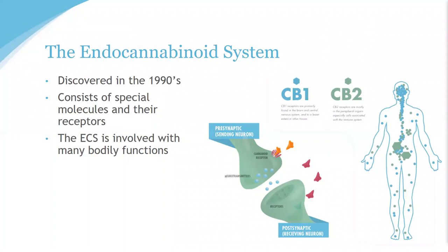In 1990, a team led by Dr. L.A. Matsuda was researching how THC — the primary psychoactive compound in cannabis — affects the human body, and they discovered what soon came to be known as the endocannabinoid system, or the ECS. The endocannabinoid system is found inside the bodies of mammals, but it is particularly complex in the human body. It can best be described as a type of communication system between specialized molecules and receptors across various systems in the body.